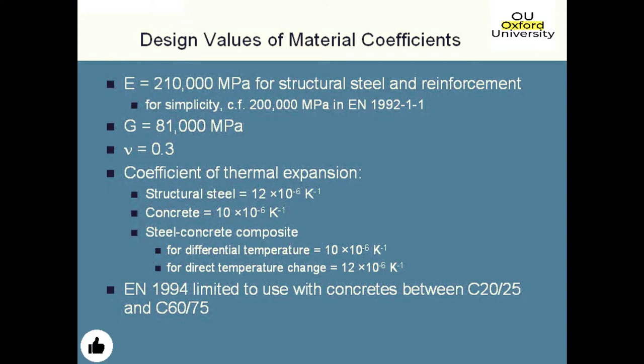If you are doing composite design as well, there are slightly different limitations given on the concrete compared to Eurocode 1992. The concrete grades have to be limited between C20/25 and C60/75. The reason that the concrete limits are a little bit lower is because of the lack of testing results for very high-grade concretes in composite sections, and because of that the code doesn't really cover them.